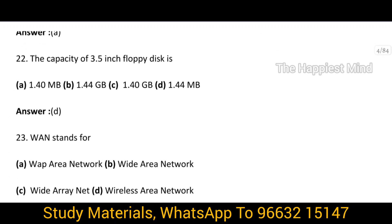Question 22: The capacity of a 3.5 inch floppy disk is — the answer is option D, that is 1.44 MB.